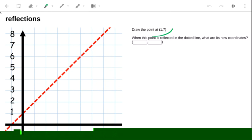Right, draw the point at 1, 7. That's one along and seven up. The point is one along, seven up. That's here.